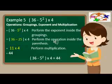According to our GEMDAS rule, perform first the exponent inside the groupings. 5 squared or 5 times 5 is 25. Next, perform the operation inside the parenthesis. So 36 minus 25 is 11.